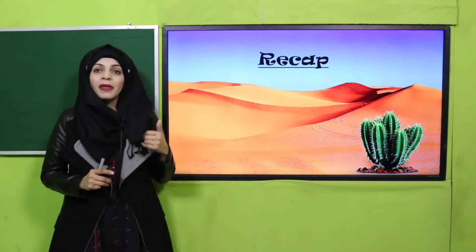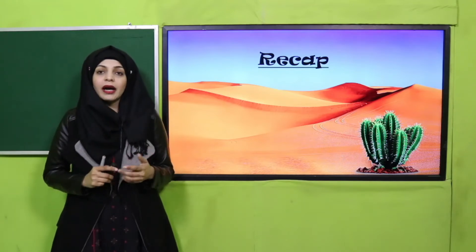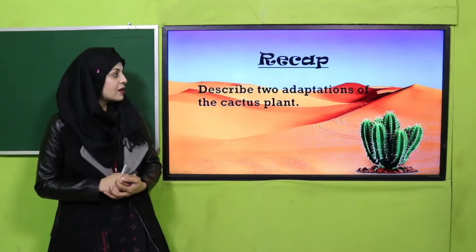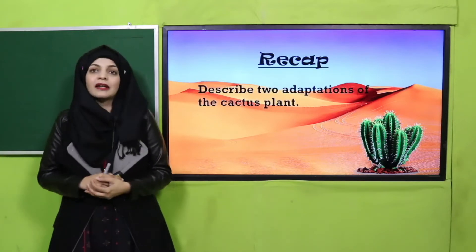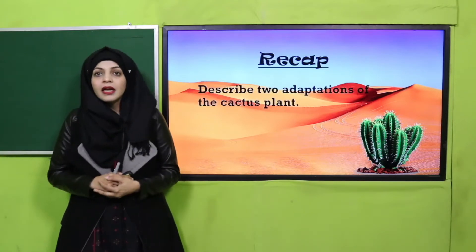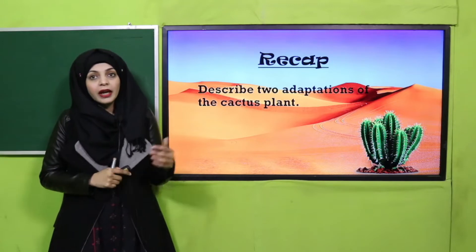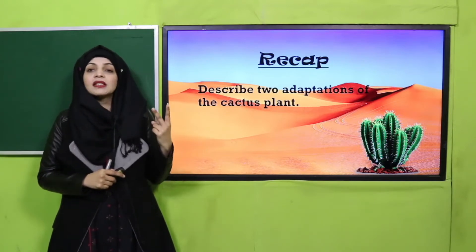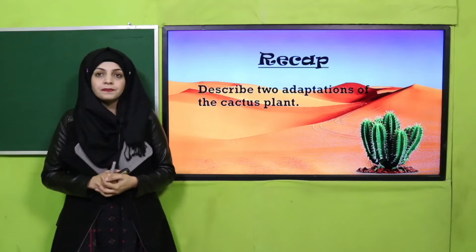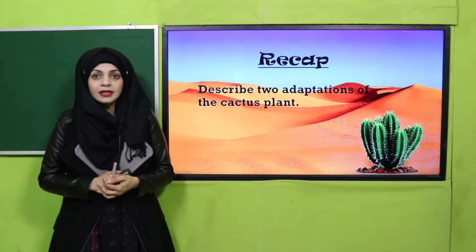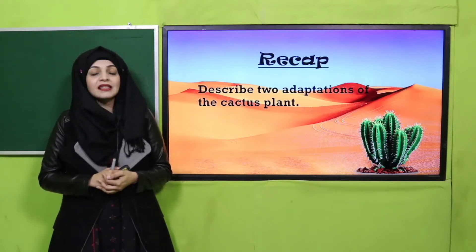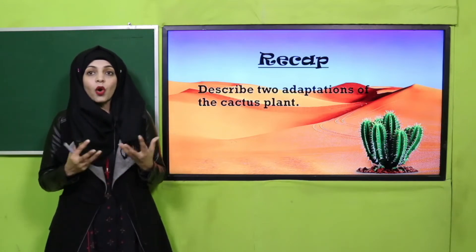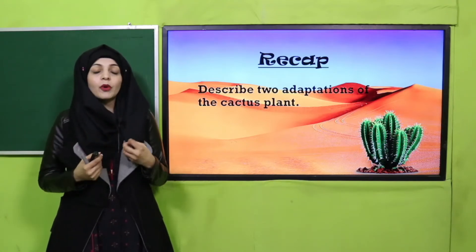We also studied one adaptation of the cactus plant. Quickly answer: describe two adaptations of cactus plant. Cactus grows in the desert — tell its two adaptations. Very good: it stores water in its stem and can survive without water for a long time, because in sandy areas water is very scarce.